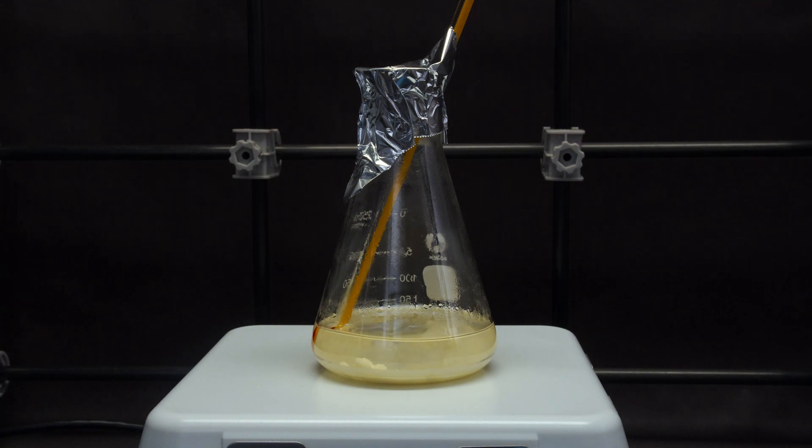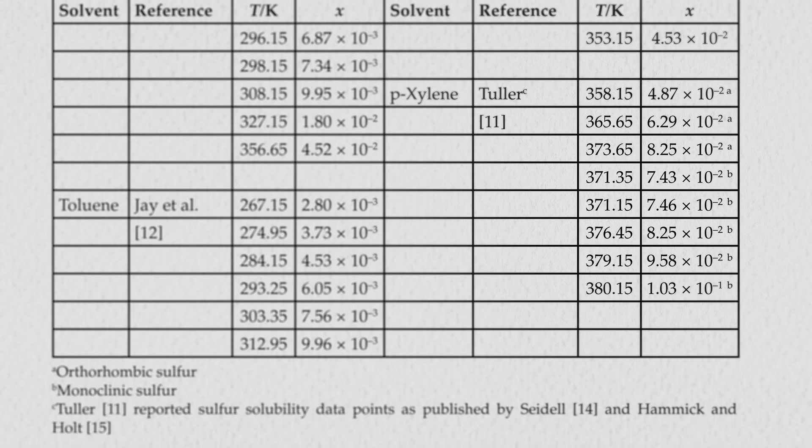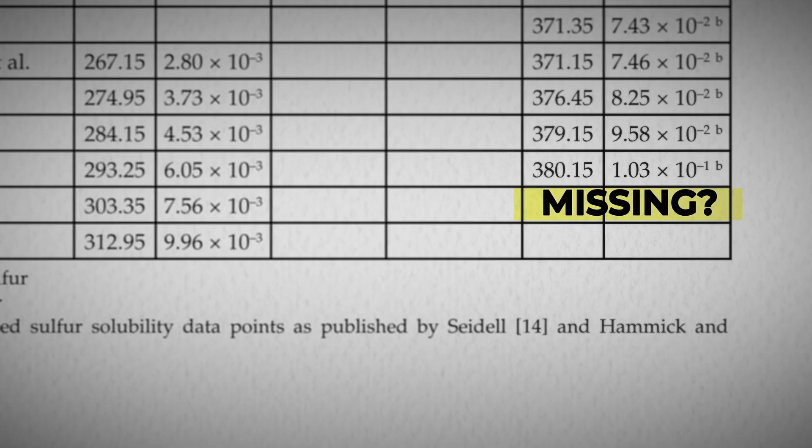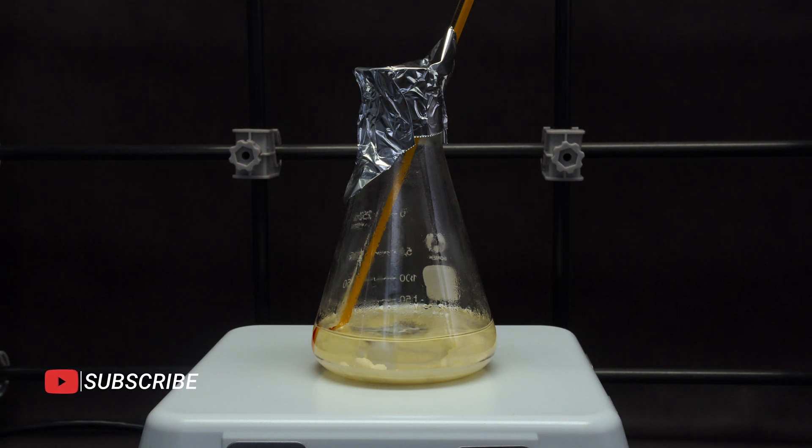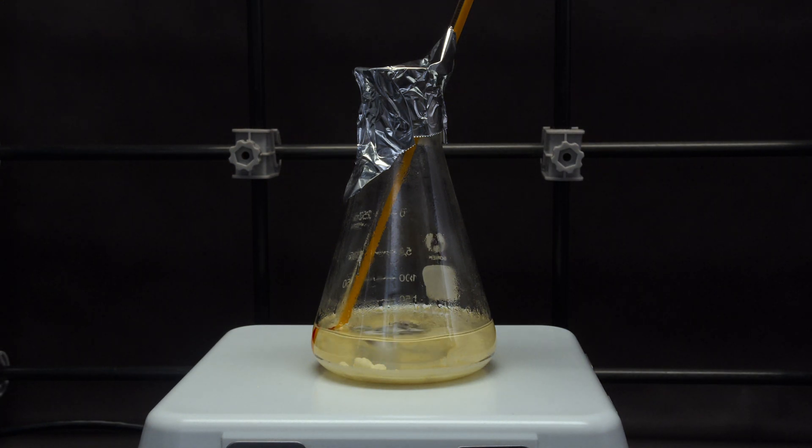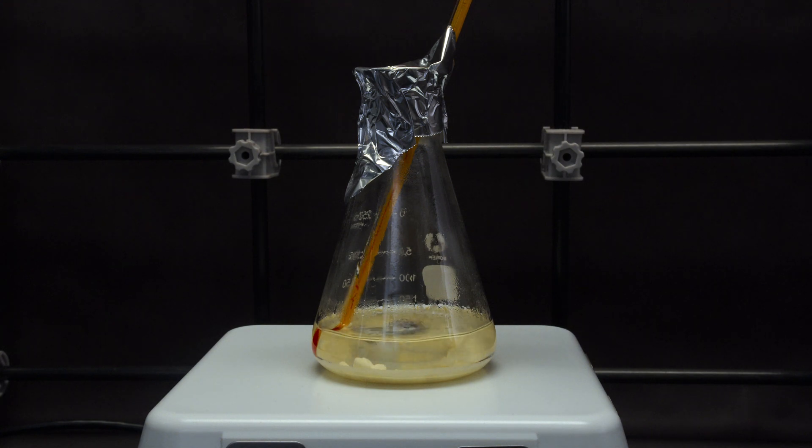In theory, xylene at 120 degrees Celsius can dissolve much more sulfur, but I do not have a literature value for that. You may also be tempted to add excess sulfur and filter off the excess solid before recrystallization, but this is not necessary for my purpose, as I am only purifying the sulfur and not attempting to grow a big crystal with it.